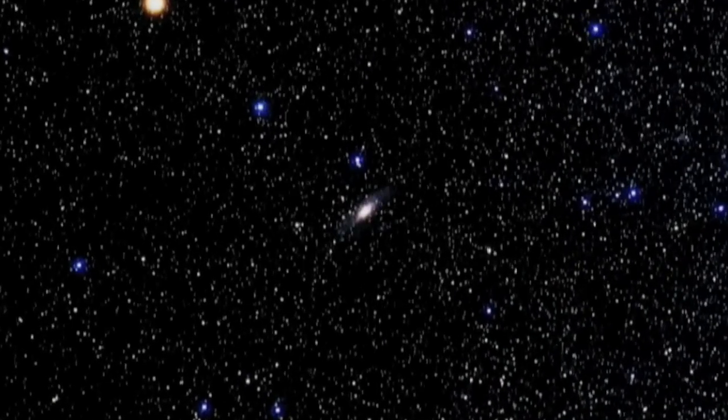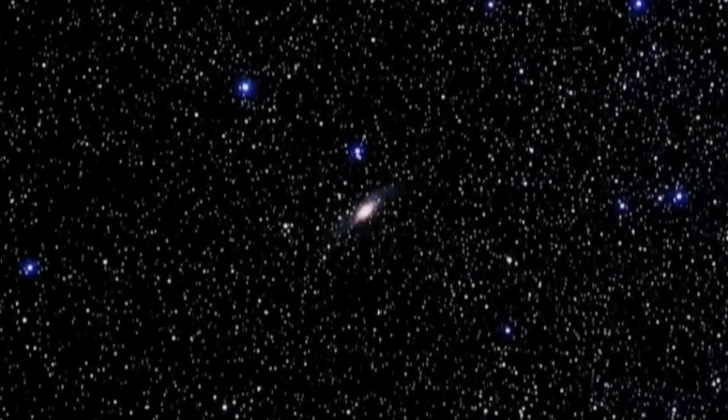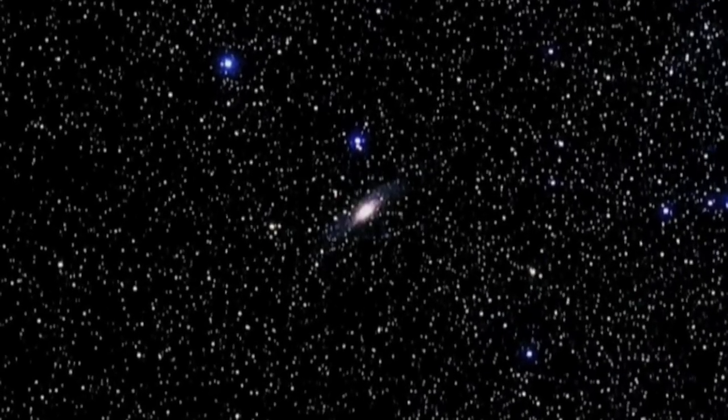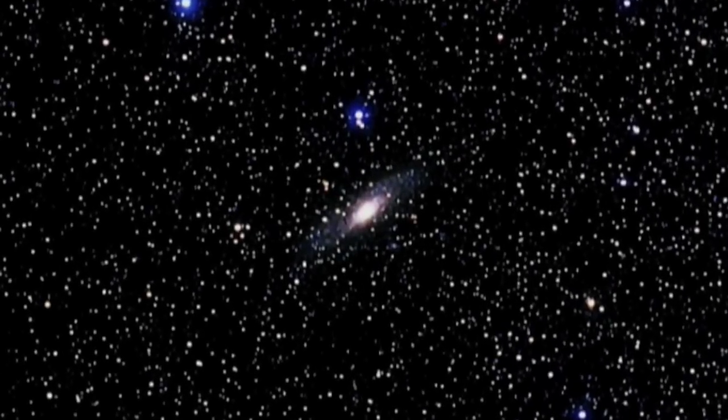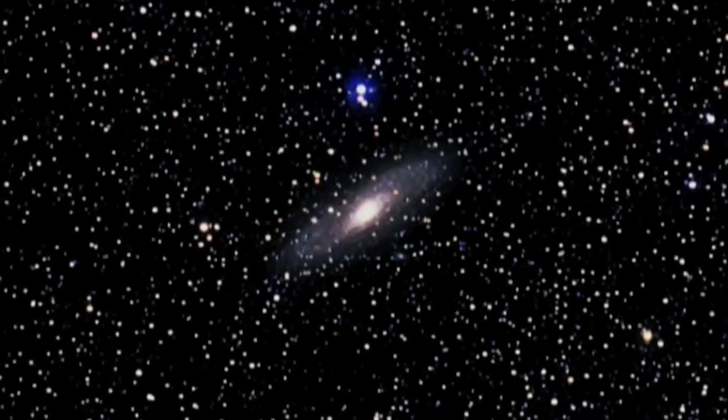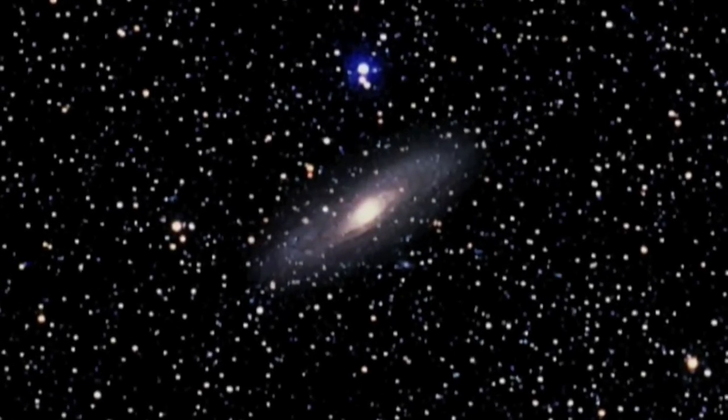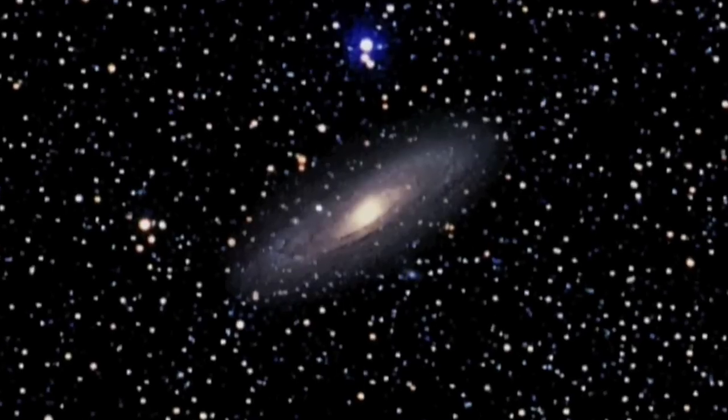The closest spiral galaxy to us is known as the Andromeda Galaxy, over two and a half million light years away and measuring 260,000 light years across. It is over twice the size of our galaxy and home to one trillion stars.